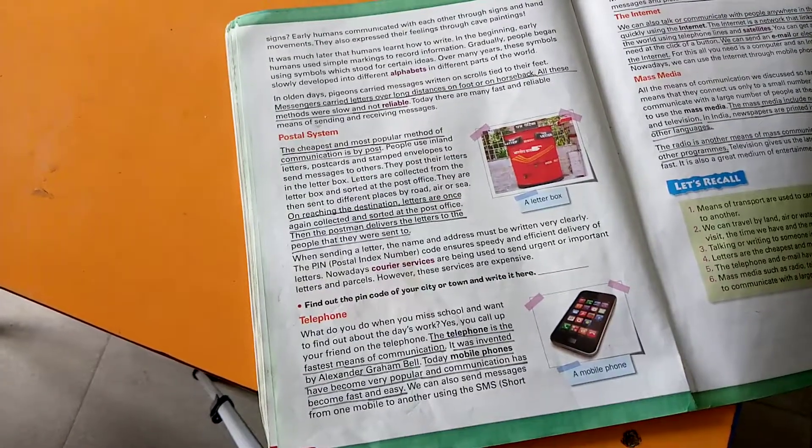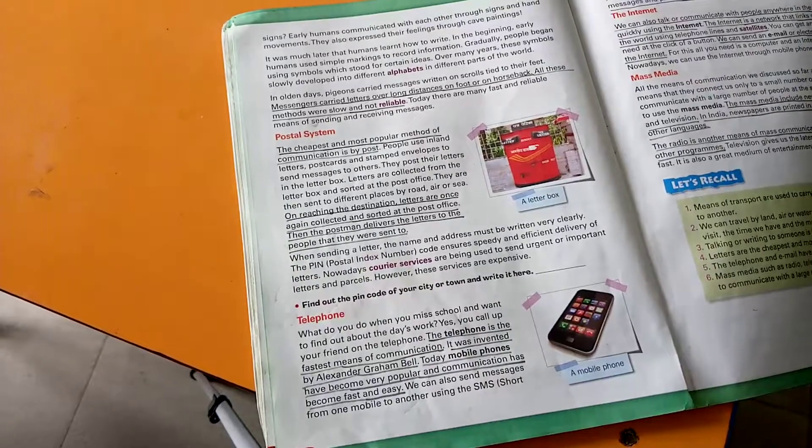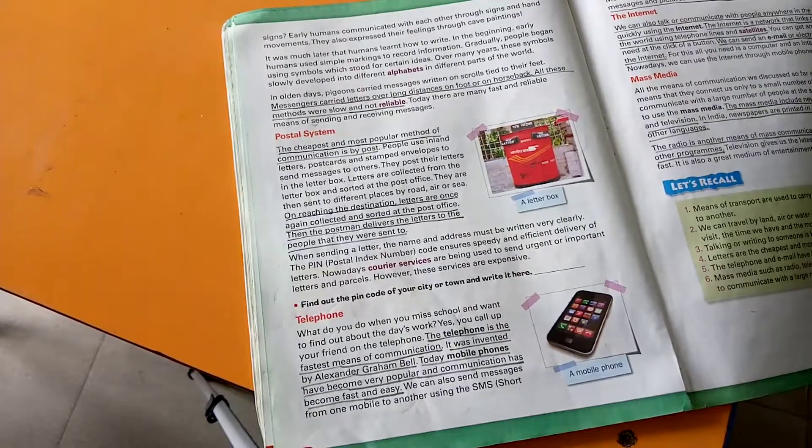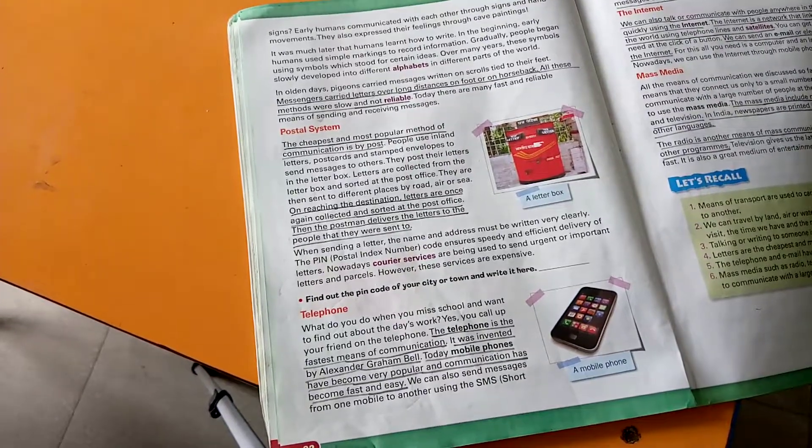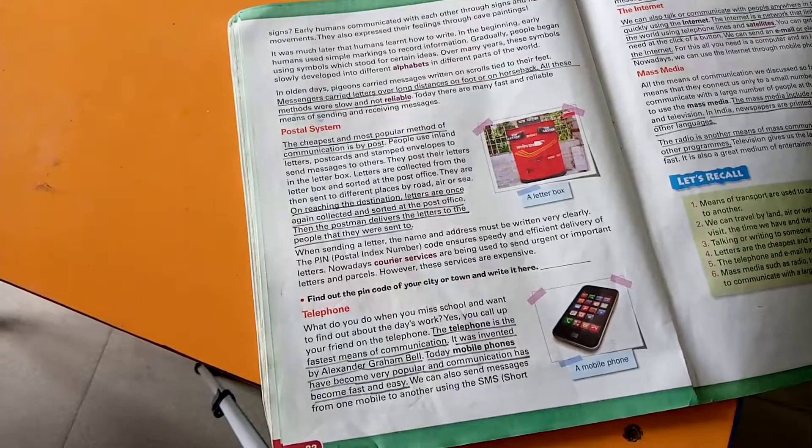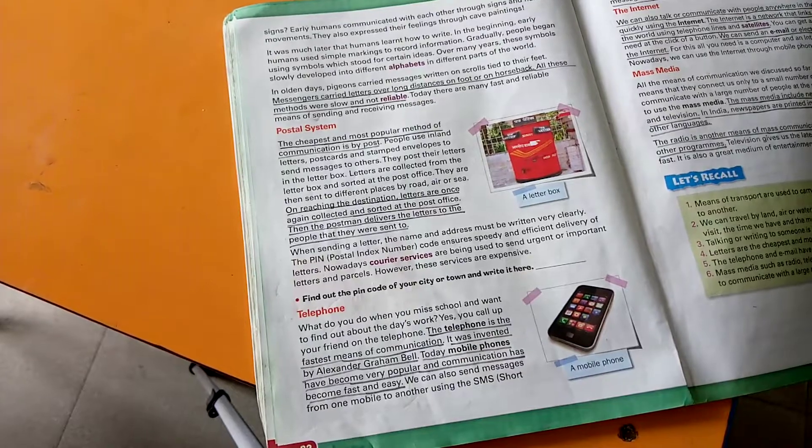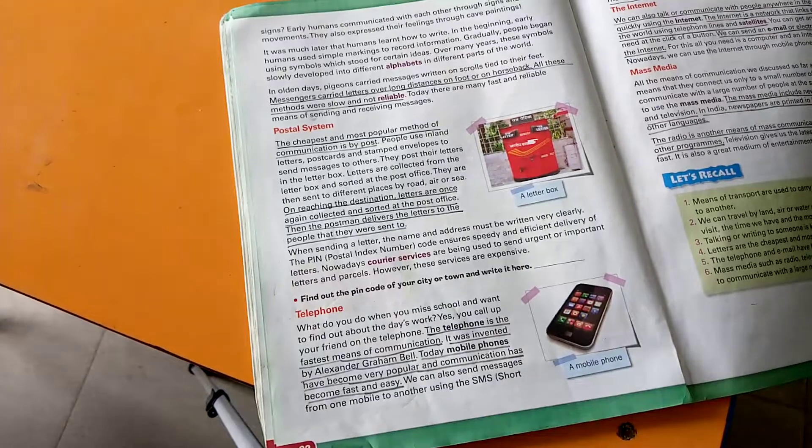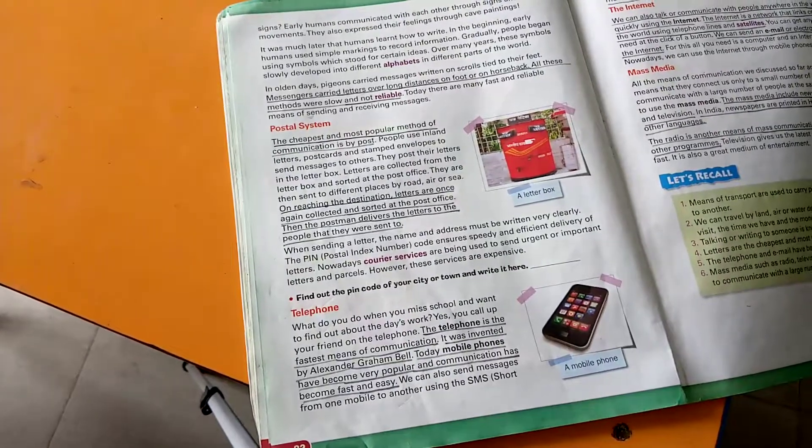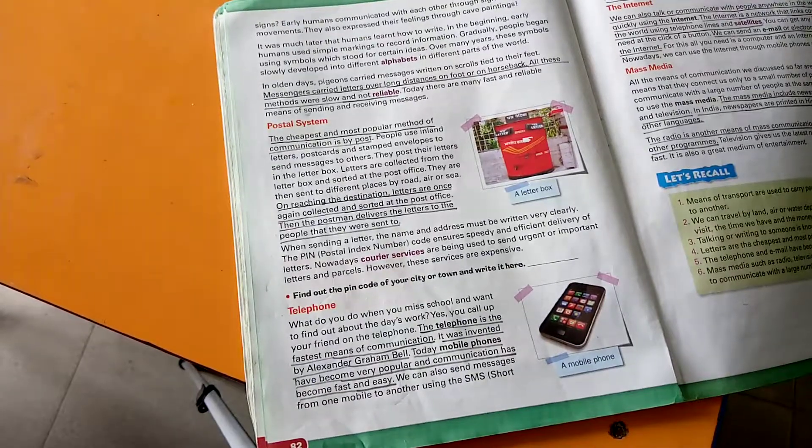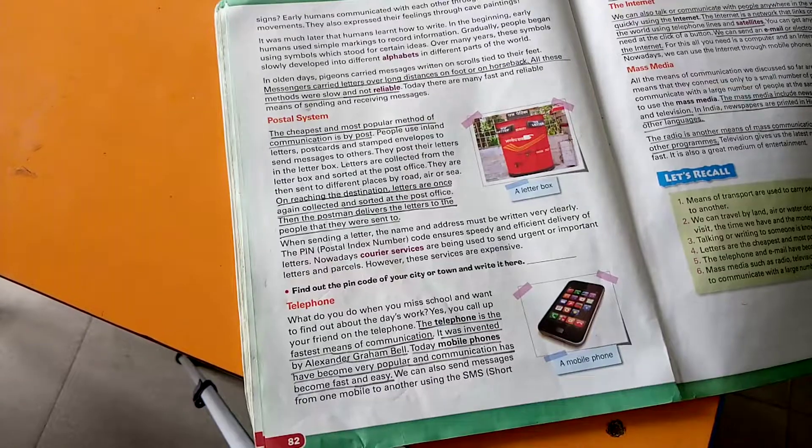There are different types of means of communication. The first one is postal system. The cheapest and most popular method of communication is by post. People use inland letters, postcards and stamped envelopes to send messages to others. They post their letters in the letterbox. Letters are collected from the letterbox and sorted at the post office. They are then sent to different places by road, air or sea. On reaching the destination, letters are once again collected and sorted at the post office. Then the postman delivers the letters to the people that they were sent to.